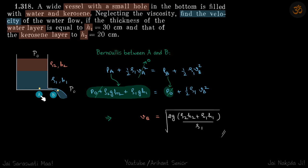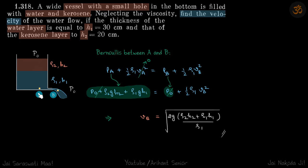Let's apply Bernoulli's equation between points A and B: p_a plus half rho_1 v_a squared equals p_b plus half rho_1 v_b squared. Now, p_a equals p0 plus rho_2 g h_2 — that's the pressure contribution from the kerosene — plus rho_1 g h_1, the pressure from the water. So p_a equals p0 plus rho_2 g h_2 plus rho_1 g h_1. Because the vessel is large, the velocity at point A is zero.